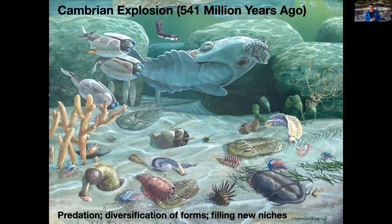The Cambrian explosion happened about 541 million years ago. Basically what happened is life forms discovered that another source of raw material was each other — they started preying on each other. That predation, combined with the very quick evolution that was happening, caused the diversification of many forms of life. In particular, when you look at the post-Cambrian explosion, you see lots of very complex multicellular organisms, including big ones like us — trilobites, sea sponges, anemones, and all kinds of weird stuff out there.